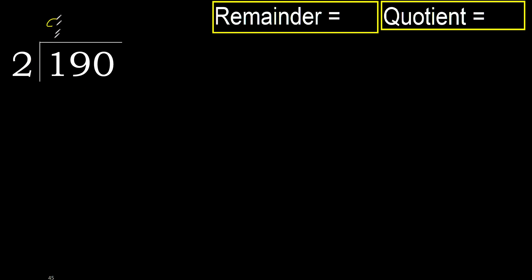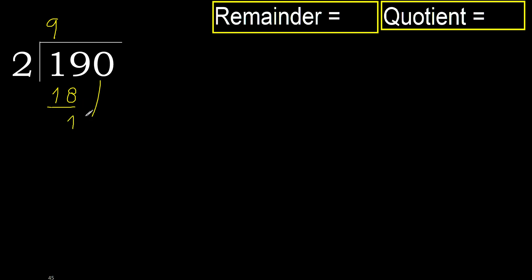18 is not greater. Subtract: 19 minus 18 equals 1. Next. Bring down the next digit: 10.